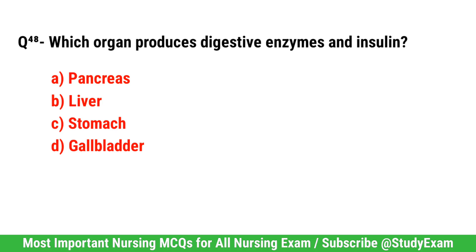Question number 48. Which organ produces digestive enzymes and insulin? Correct answer is A. Pancreas.